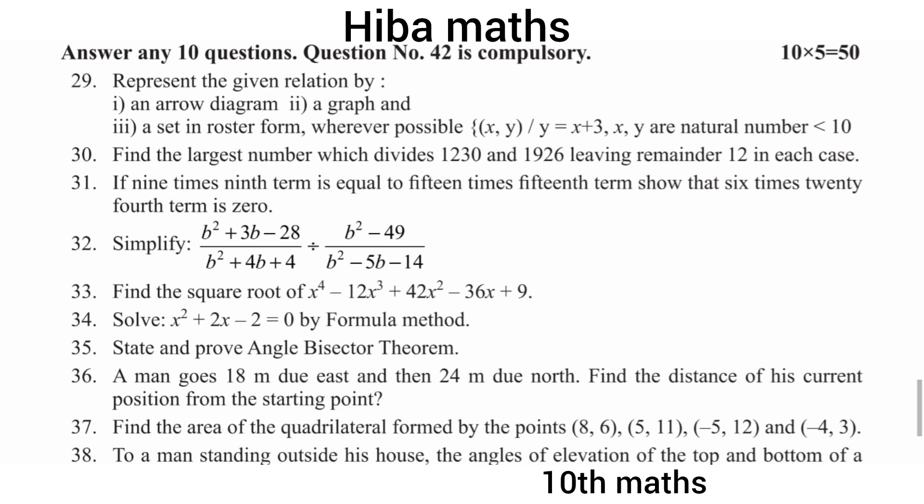Find the square root of x to the power 4 minus 12x cubed plus 42x squared minus 36x plus 9. Also solve x squared plus 2x minus 2 equals 0 by formula method. The formula is: root equals minus b plus or minus the square root of b squared minus 4ac, divided by 2a.